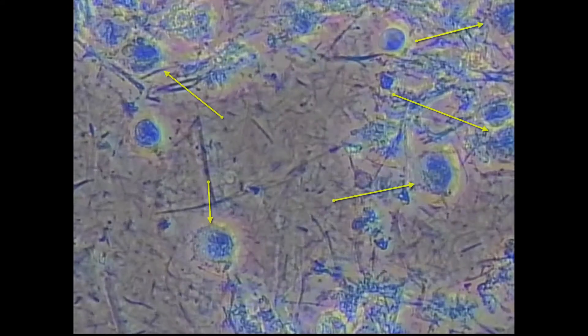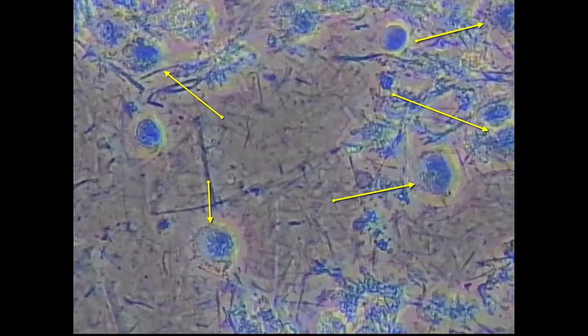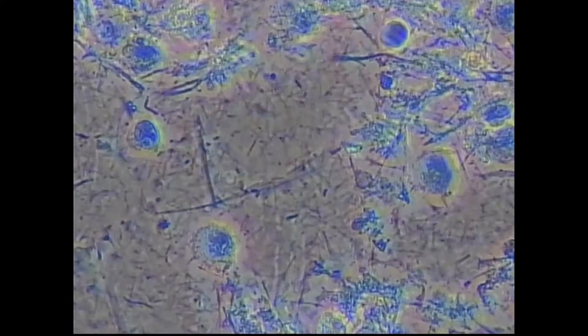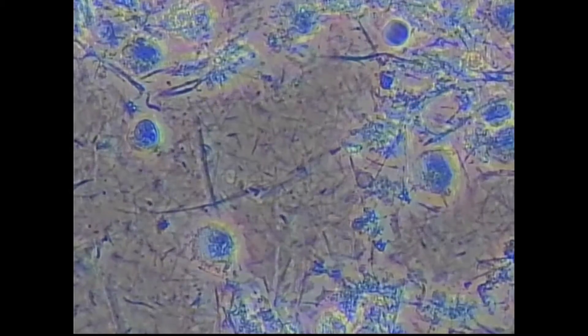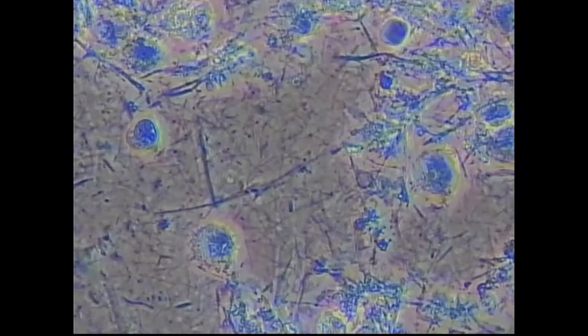You have large PMNs that are mounting an immune response to the infection, and the corkscrew-like bacteria that's moving, or the actual spirochetes that are infecting his mouth.